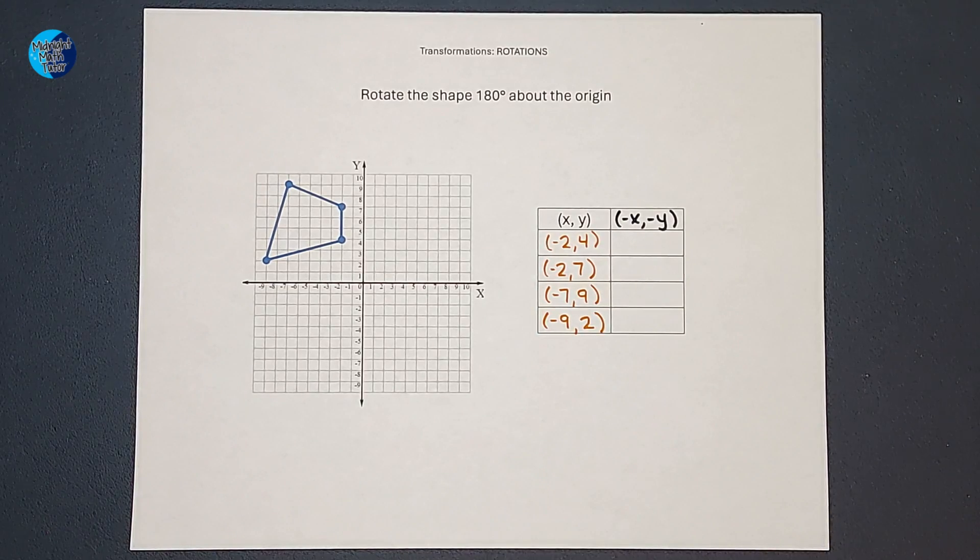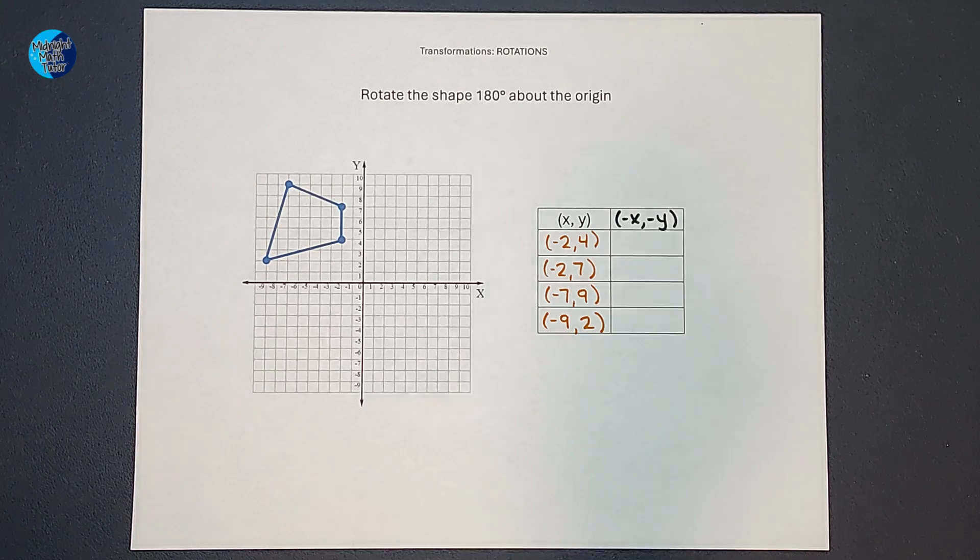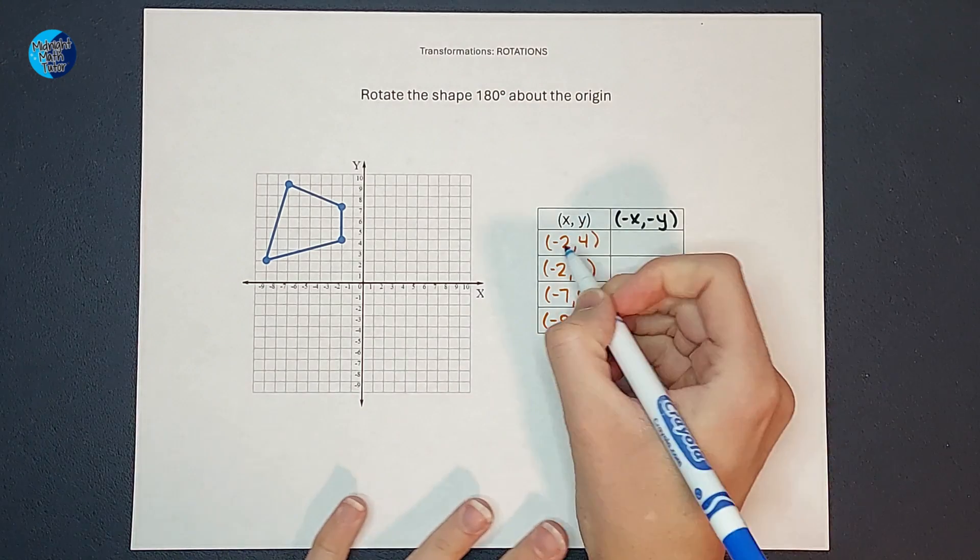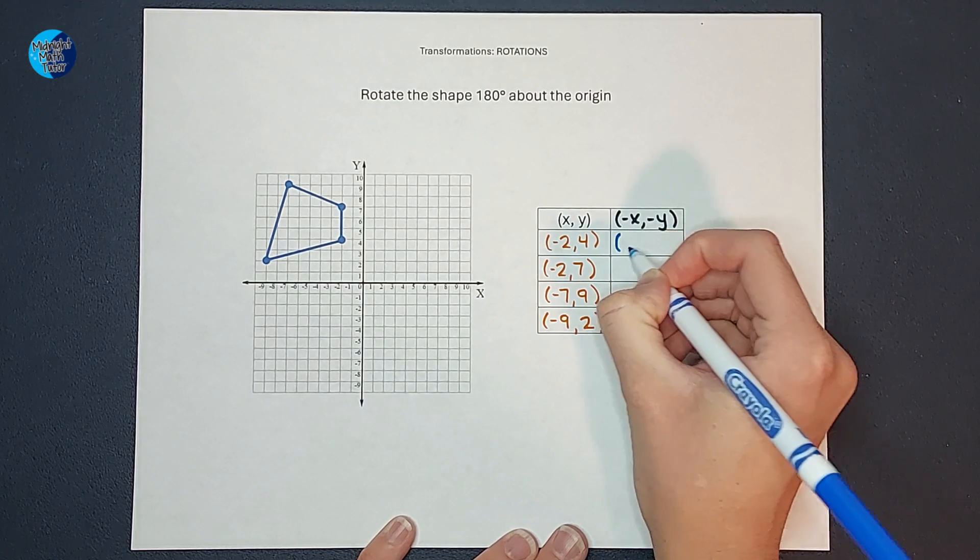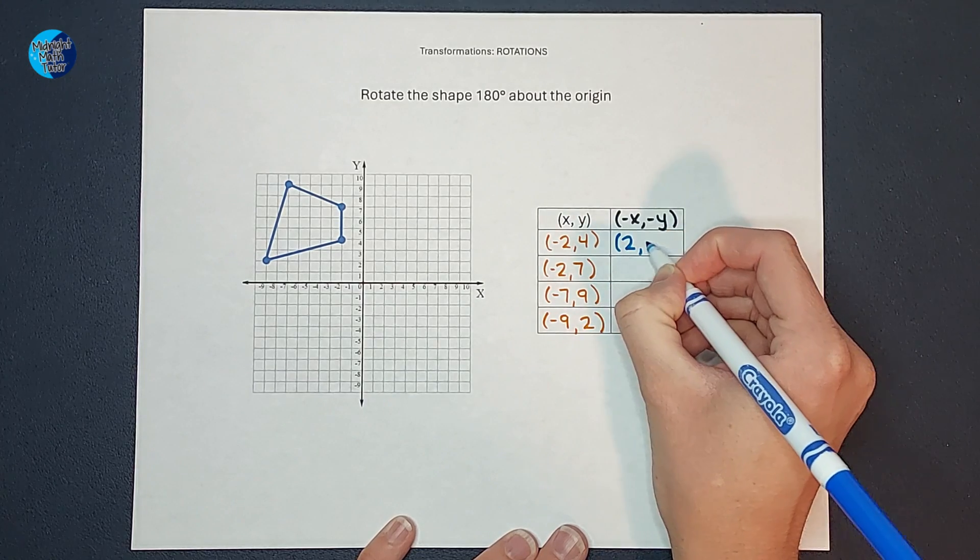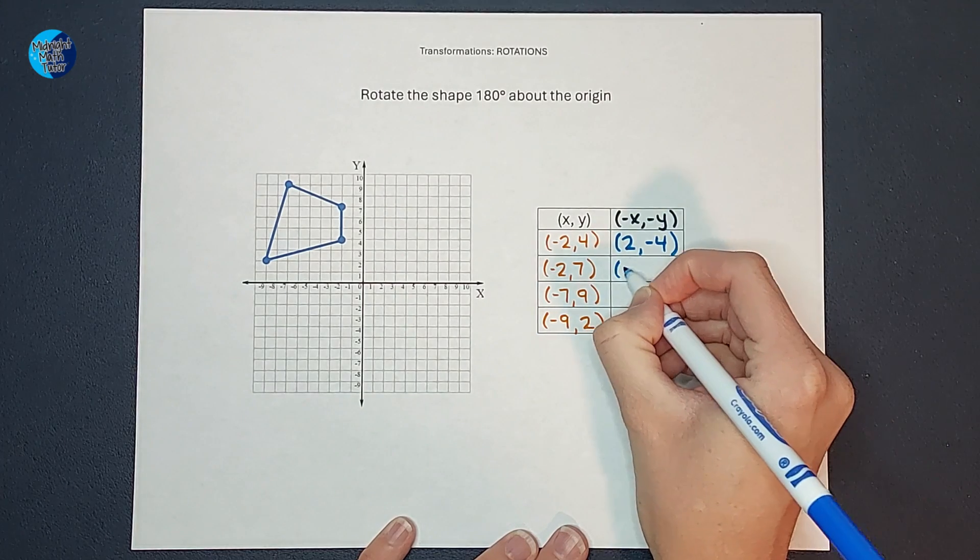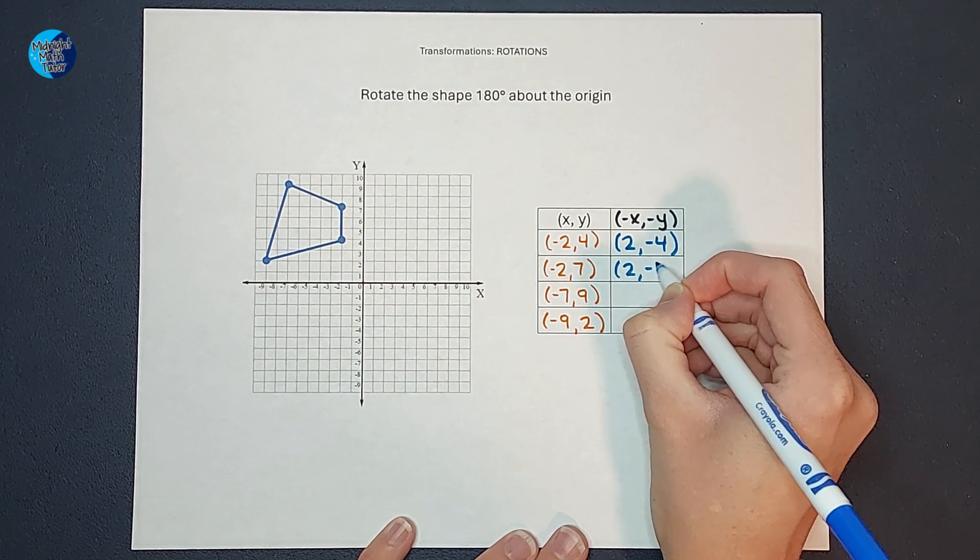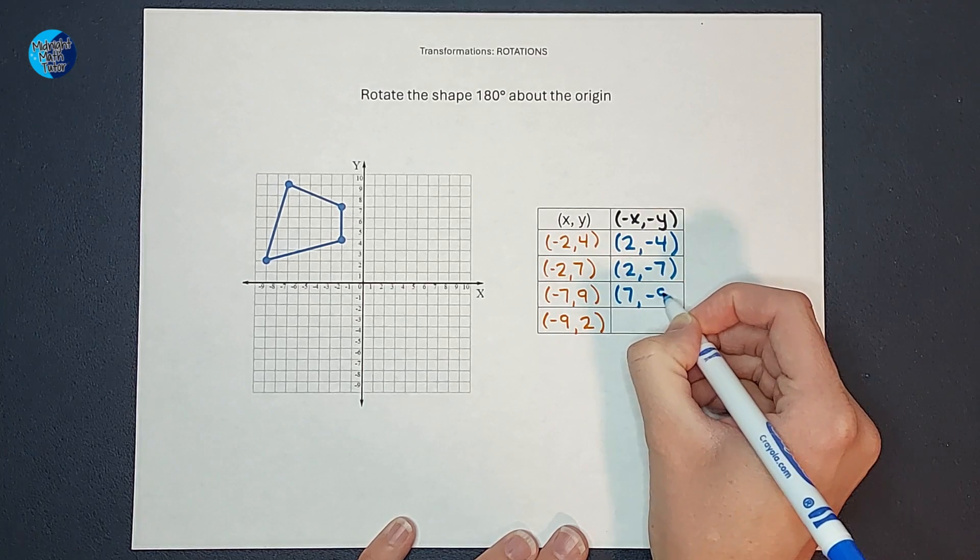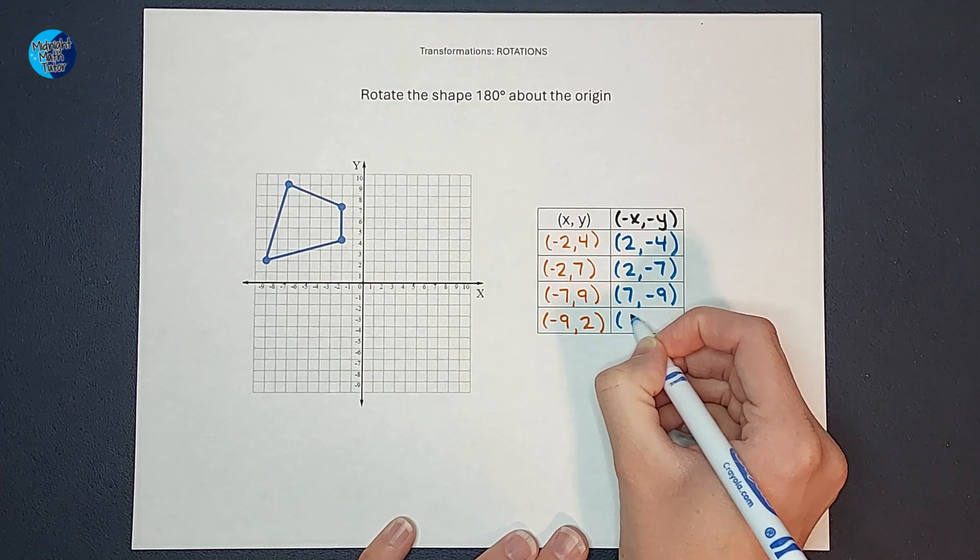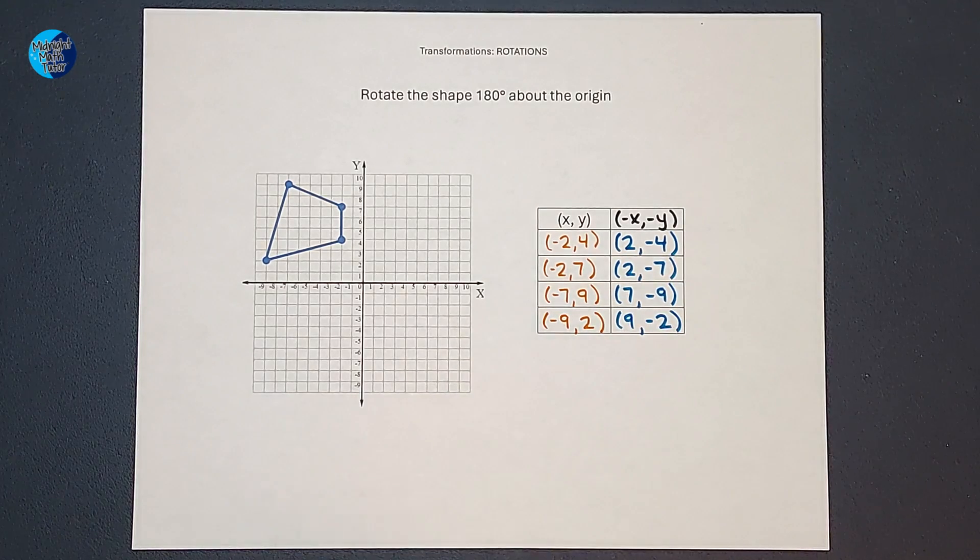Okay, there are all of those points. Now all I'm going to do is change their signs. So here where two is negative and four is positive, I'm going to make two positive and four negative. Okay, this one as well. I'm going to make the two positive, the seven negative. Seven positive, nine negative, nine positive, two negative. So I just switched all their signs.